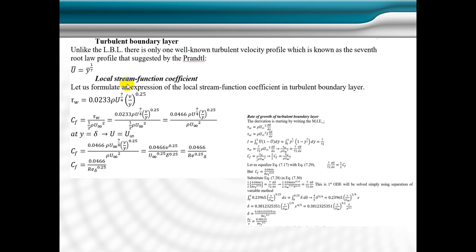After that, we transfer to the turbulent boundary layer. The turbulent boundary layer, unlike the laminar boundary layer, has only one velocity profile, which is known as the Prandtl 1/7th root law profile. We make the derivation in order to find out the relation of friction factor with respect to Reynolds number in the turbulent region. Also, we find out the rate of growth relation, as indicated here.